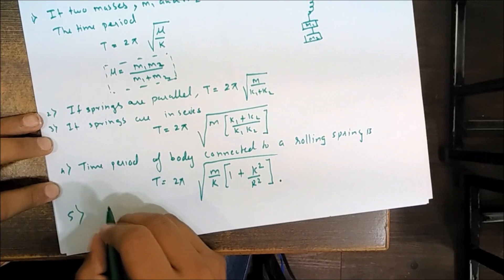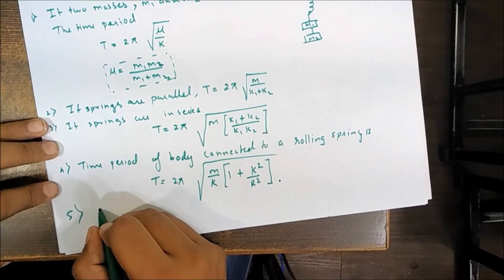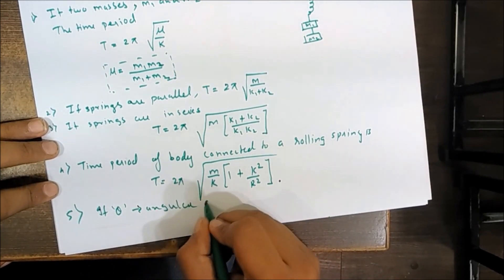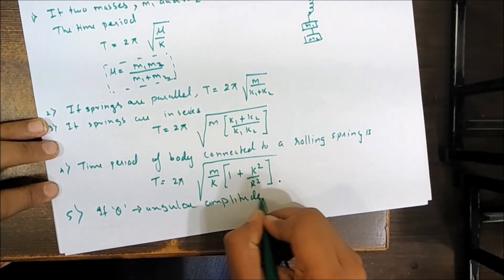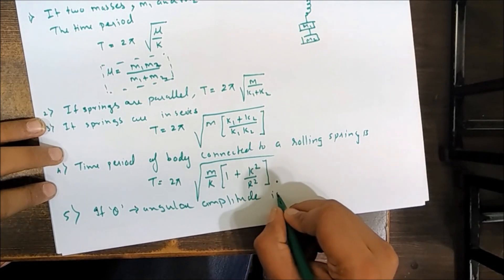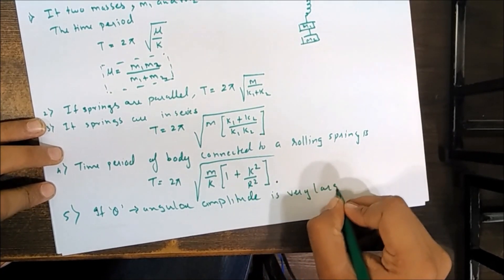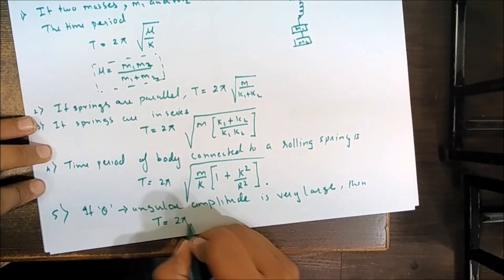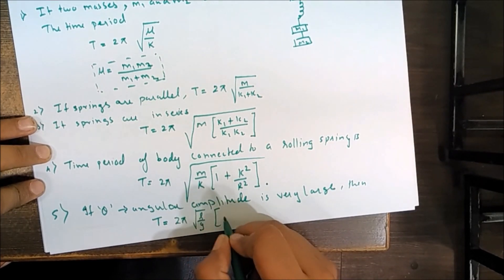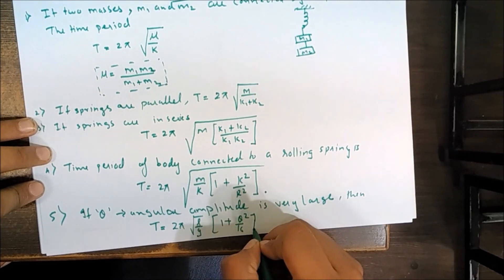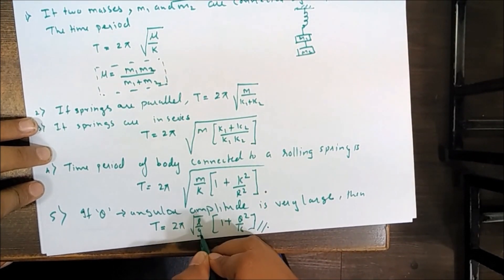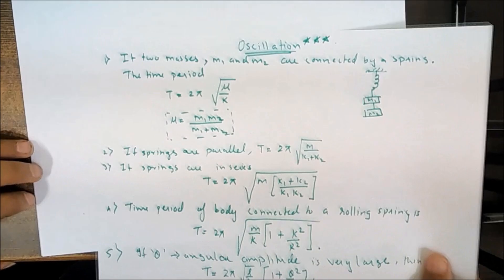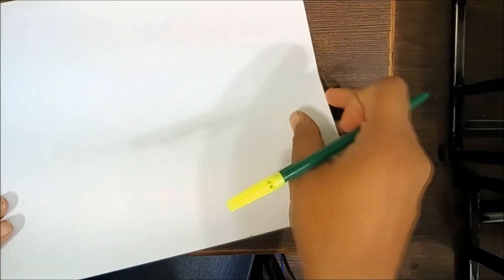Next synopsis: when the angular amplitude (large θ) during oscillation is very large, the time period is given by T = 2π√(L/g) · (1 + θ²/60). Note that the factor (1 + θ²/60) is outside the square root. These are the time periods discussed under different conditions for the chapter oscillation.